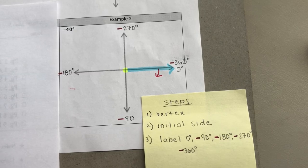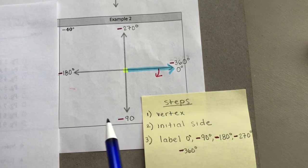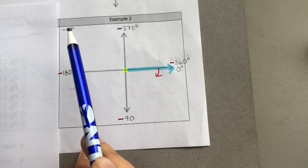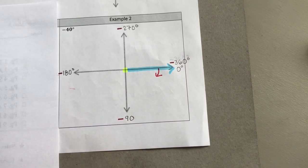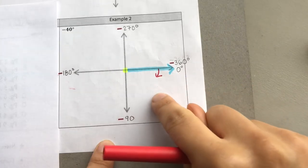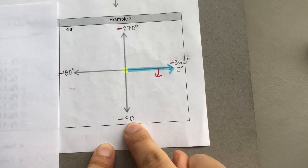All right, so this is what you should have after labeling those angles that we know for sure. We're ready to draw the negative 40 degree angle. We know that negative 40 has to be somewhere right here between 0 and negative 90.